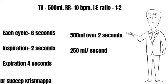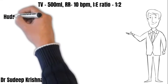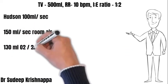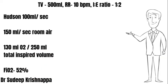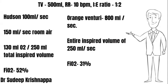How does each mask perform in this scenario? Hudson's mask with a 6 L/min flow provides 100 mL per second, but we need 250 mL per second. The remaining 150 mL must be room air. So in the 250 mL total: 100 mL comes from the Hudson's mask as pure oxygen, and 150 mL is room air. The 150 mL of room air contains about 30 mL of oxygen, giving a total of 130 mL of oxygen in the 250 mL inspired each second.